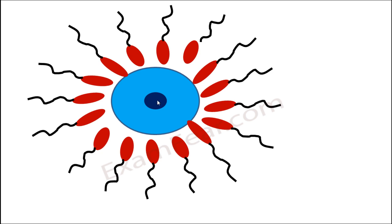The ovum has an outermost corona radiata layer and then the zona pellucida layer outside. A human male secretes millions of sperms, but a good percentage are not healthy — some are non-motile, some do not have proper structure. Even so, a huge number of sperms enter the female body, but many are lost while traveling through the vaginal area and uterus to the fallopian tube. Only a few can actually reach near the ovum.